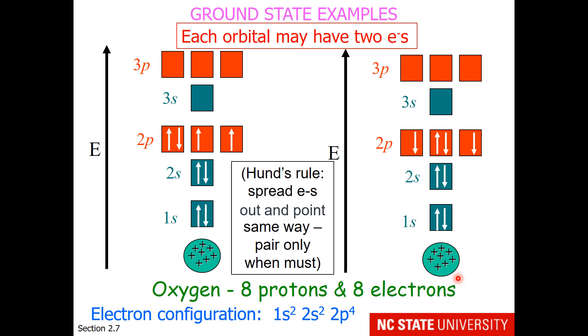How does this relate to electron configuration? Well, we have two electrons in the 1s, two electrons in the 2s, and four electrons in the 2p. So we would write this 1s2, 2s2, 2p4.